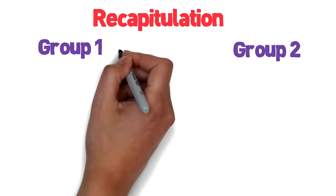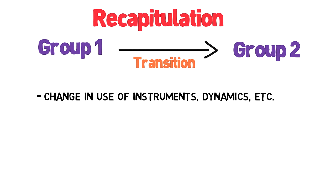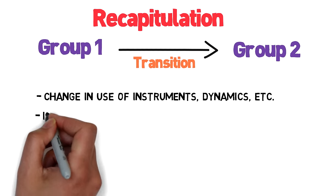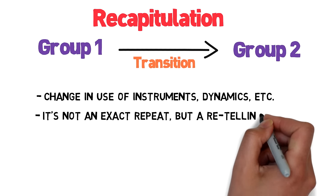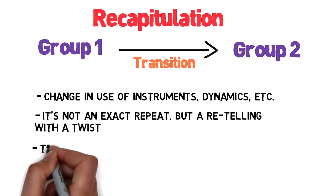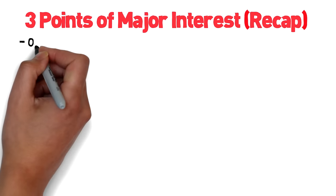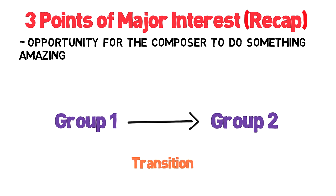Next comes the recapitulation. The point of this is to recap the two groups of the exposition, at least to some extent. However, there are always surprising twists — some will be subtle, like a change in the way they use their instruments, dynamics, or something. Other changes are more significant. So it's not an exact repeat of the exposition, but more a kind of retelling of it in a slightly different way. The two groups don't have to be stated in their entirety. In fact, it's actually more important to state the second group fully than the first, because the second group's recap will no longer be in its original key, but in the home tonic. So the conflict that was set up in the exposition is in some sense resolved in the recapitulation. There are three points of major interest in the recapitulation which give license for the composer to do something amazing.